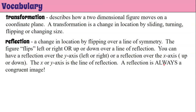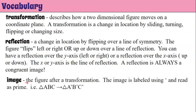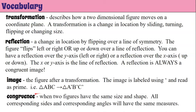A reflection is always a congruent image. Image is the figure after transformation. The image is labeled using an apostrophe, read as 'prime' in math. So for example, if we have triangle ABC and it undergoes a transformation, it becomes triangle A prime B prime C prime. Congruence is when two figures have the same size and shape — all corresponding sides and angles have the same measures.